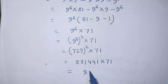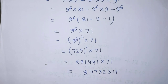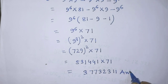Multiplying both numbers gives us 37,732,311. This is our final answer. If you like this video and this trick, please support me and subscribe to my channel. Thank you, bye bye.